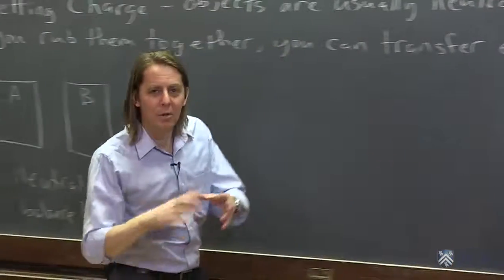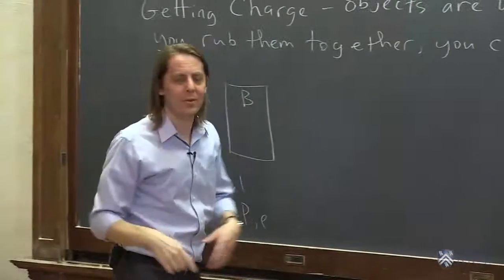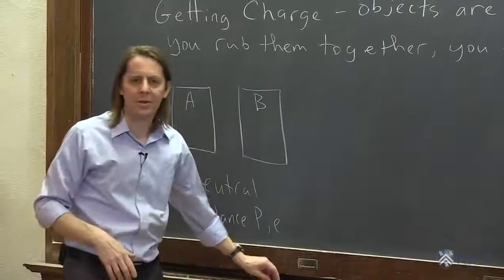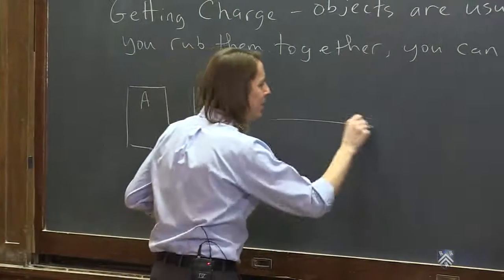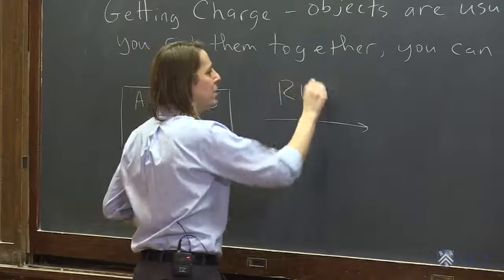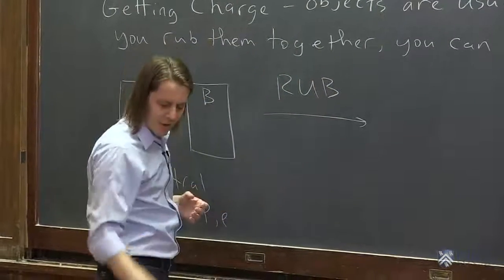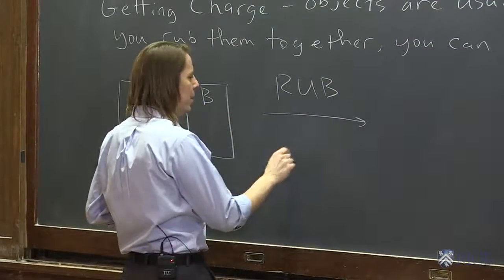And it's the electrons because they're the loosely bound things that are just flying around—it's not that hard to knock some of those off. So then the process would be, if we wanted to write this kind of like a bad chemical reaction here, you rub and what's going to happen is you're going to transfer...